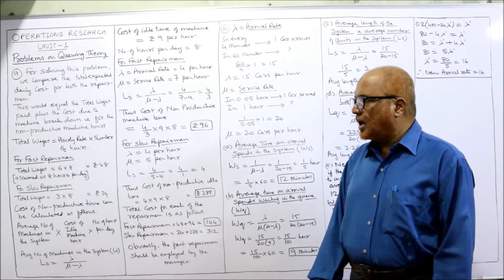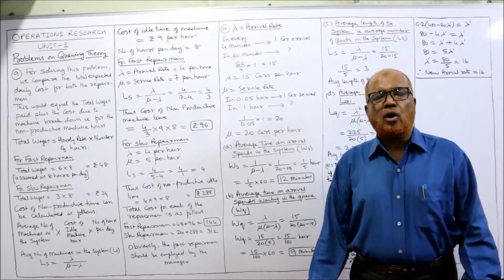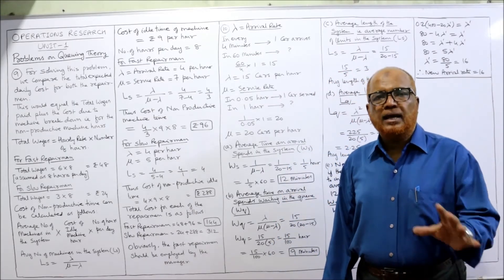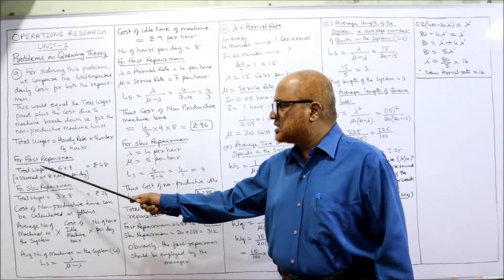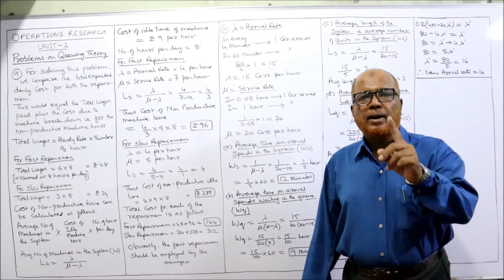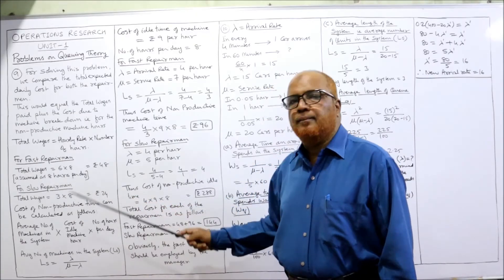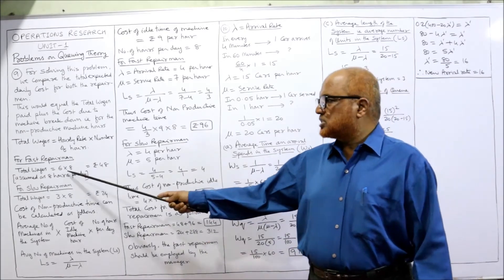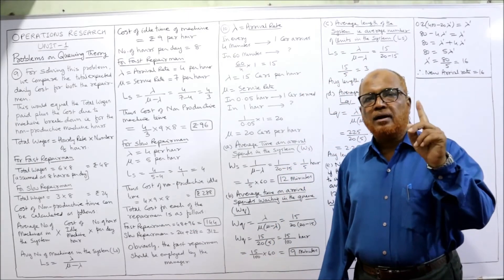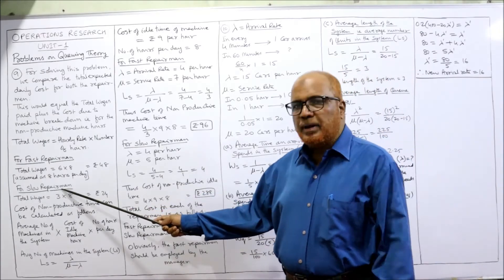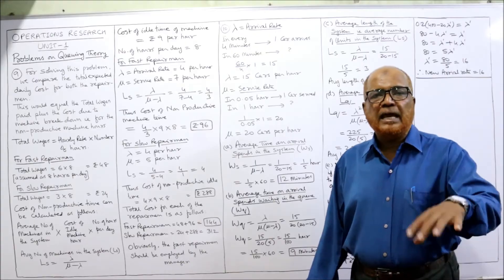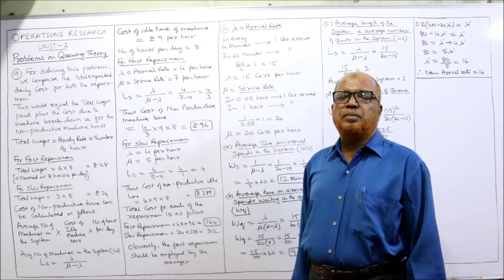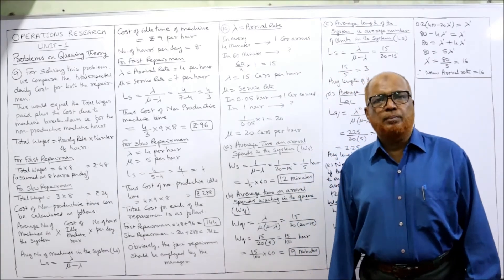Total wages equals hourly rate multiplied by number of hours. We assume one shift is eight hours per day. For the fast repairman: six rupees per hour into eight hours equals 48 rupees per day. For the slow repairman: three rupees per hour into eight hours equals 24 rupees per day.